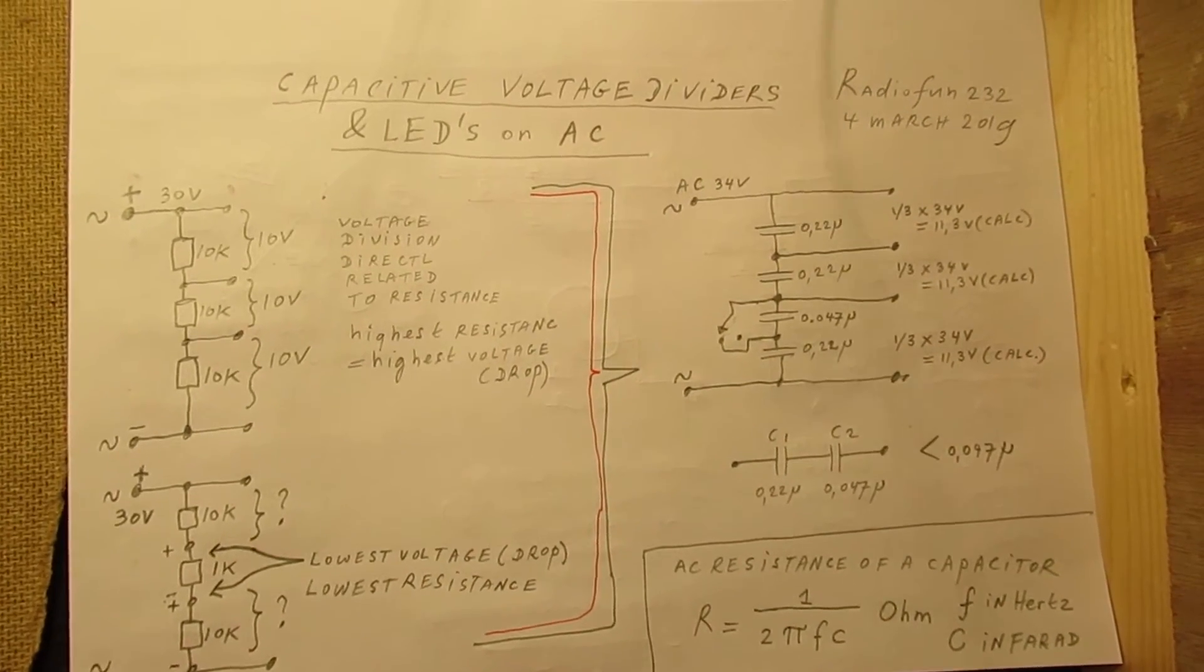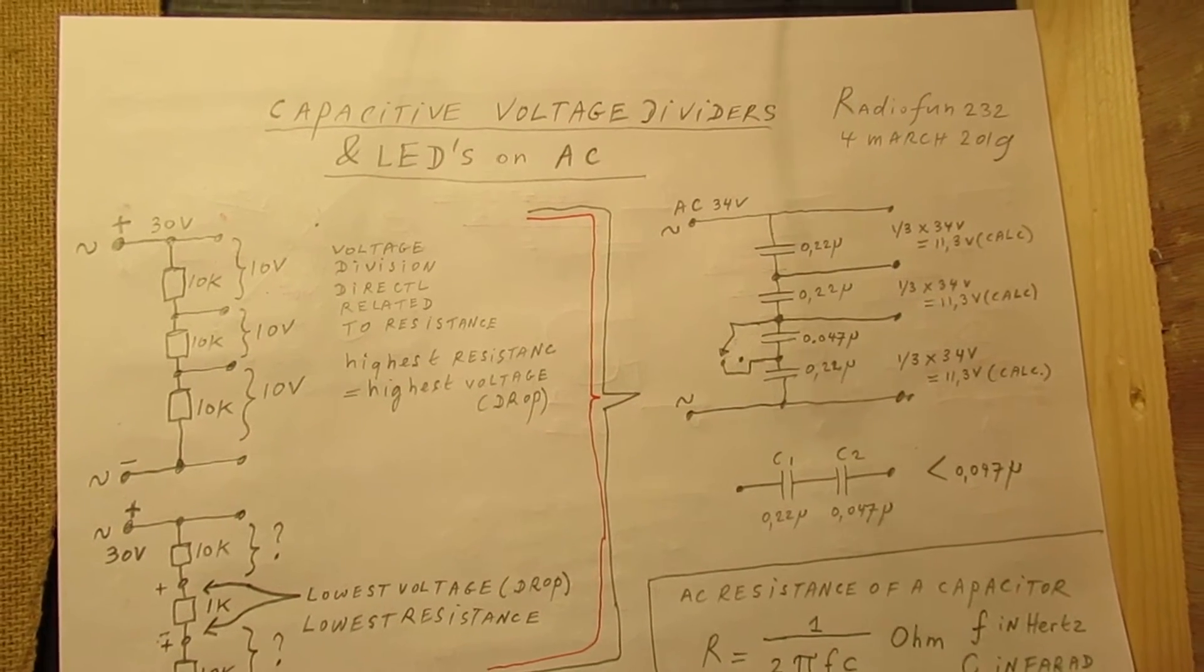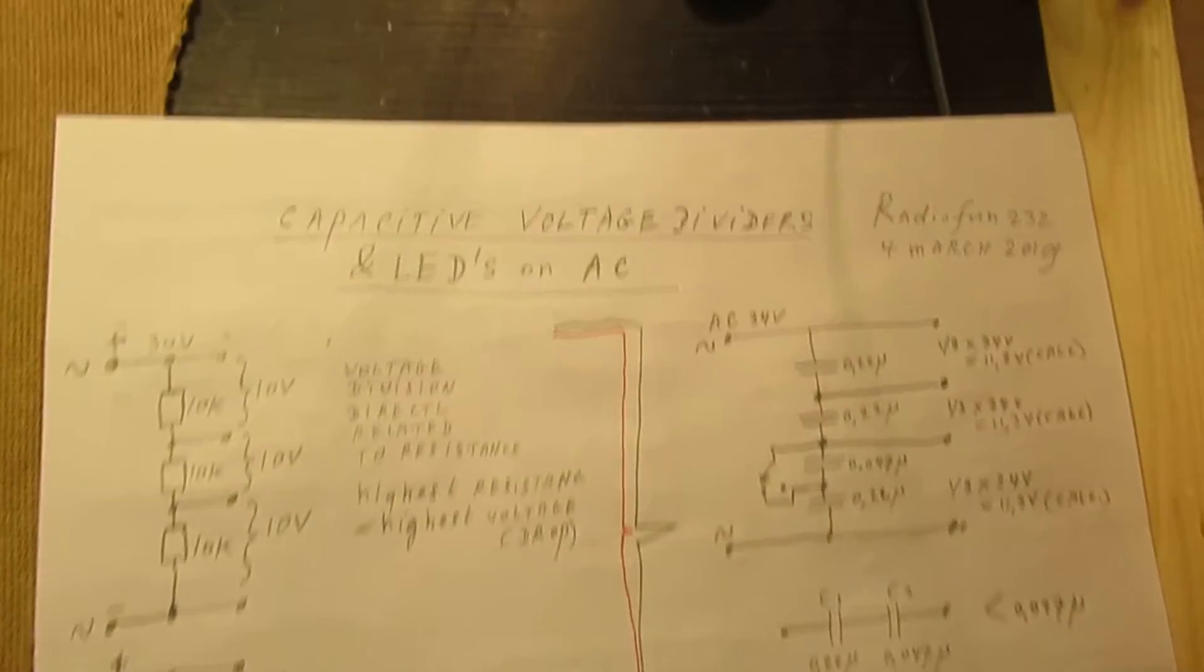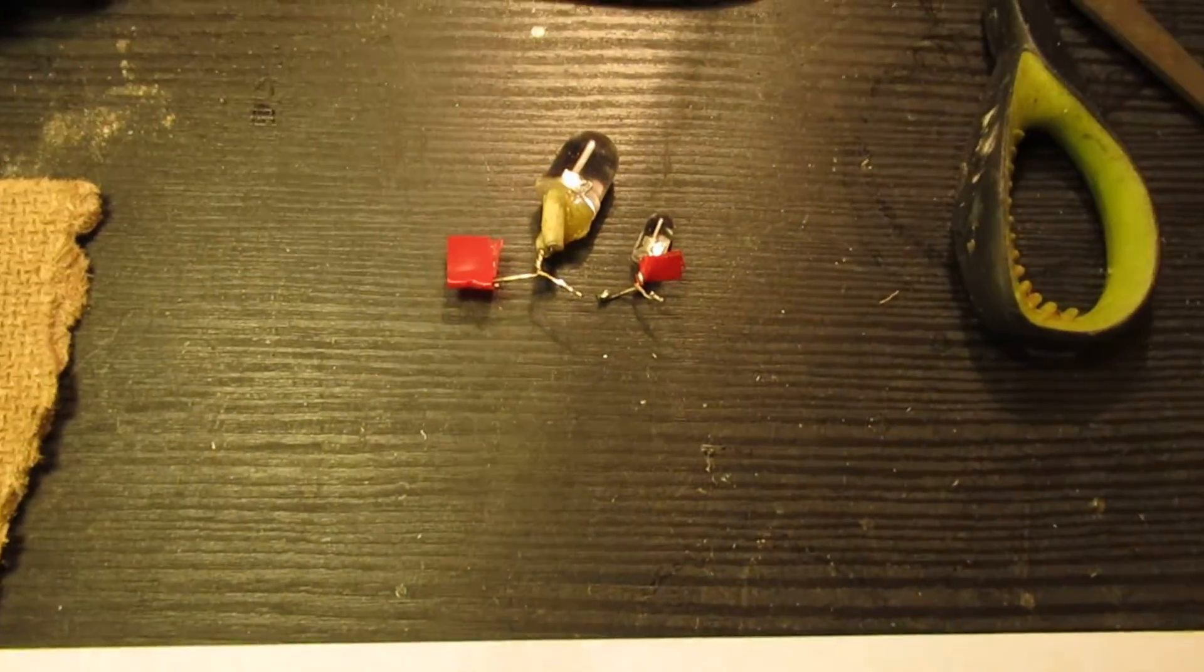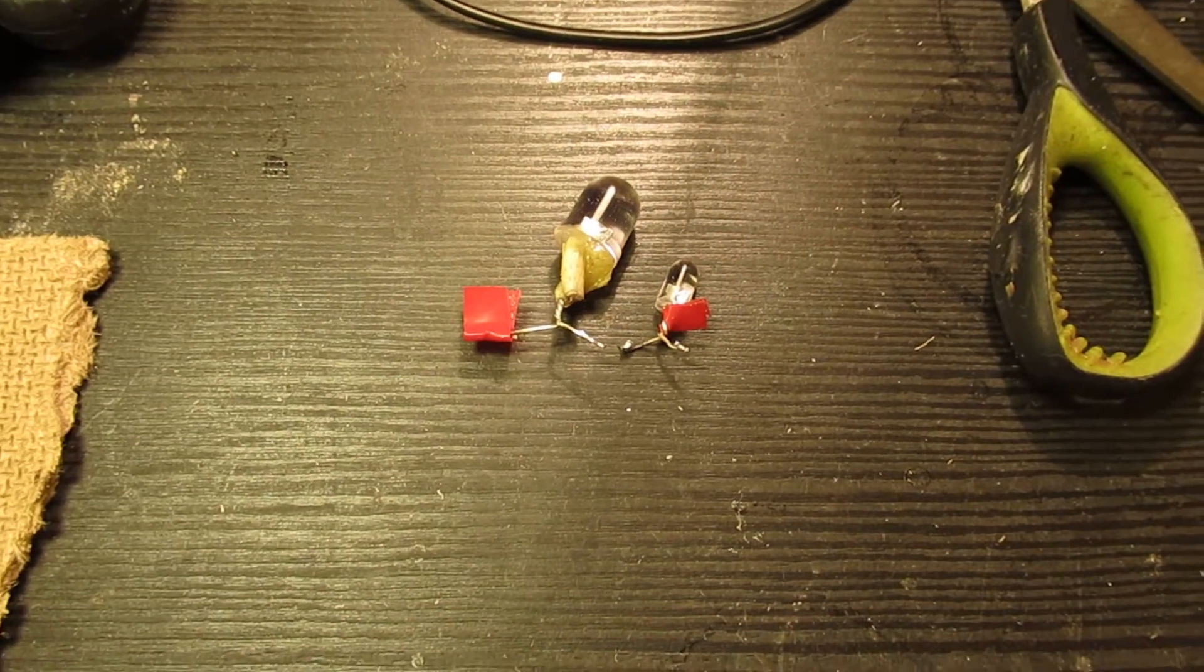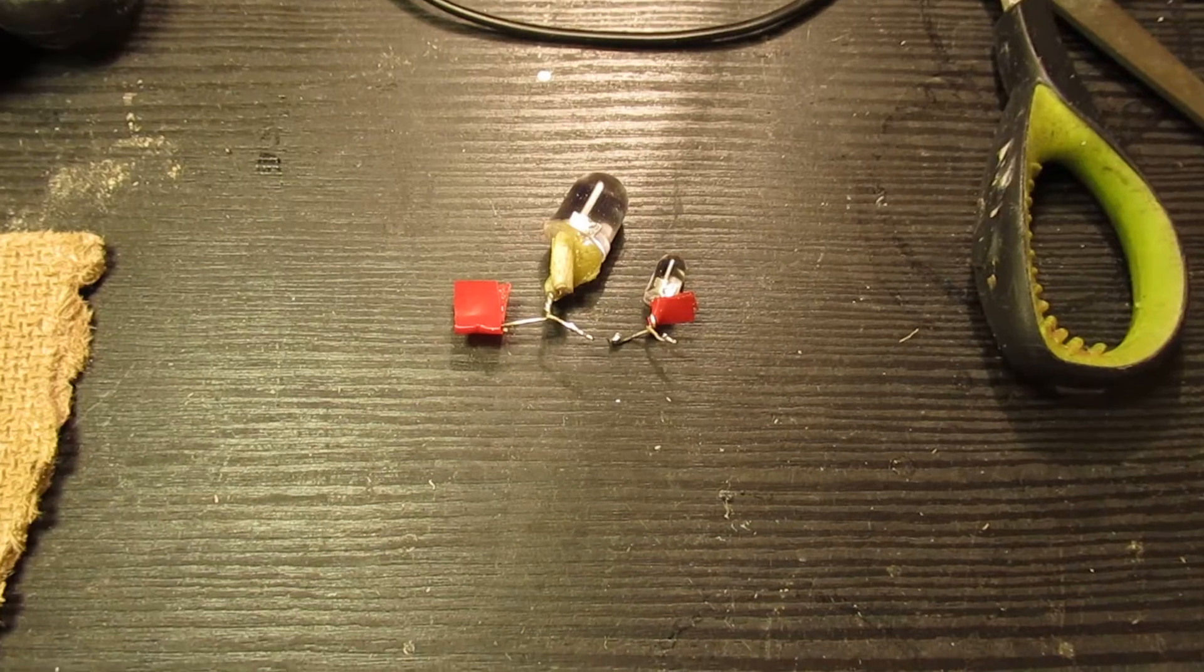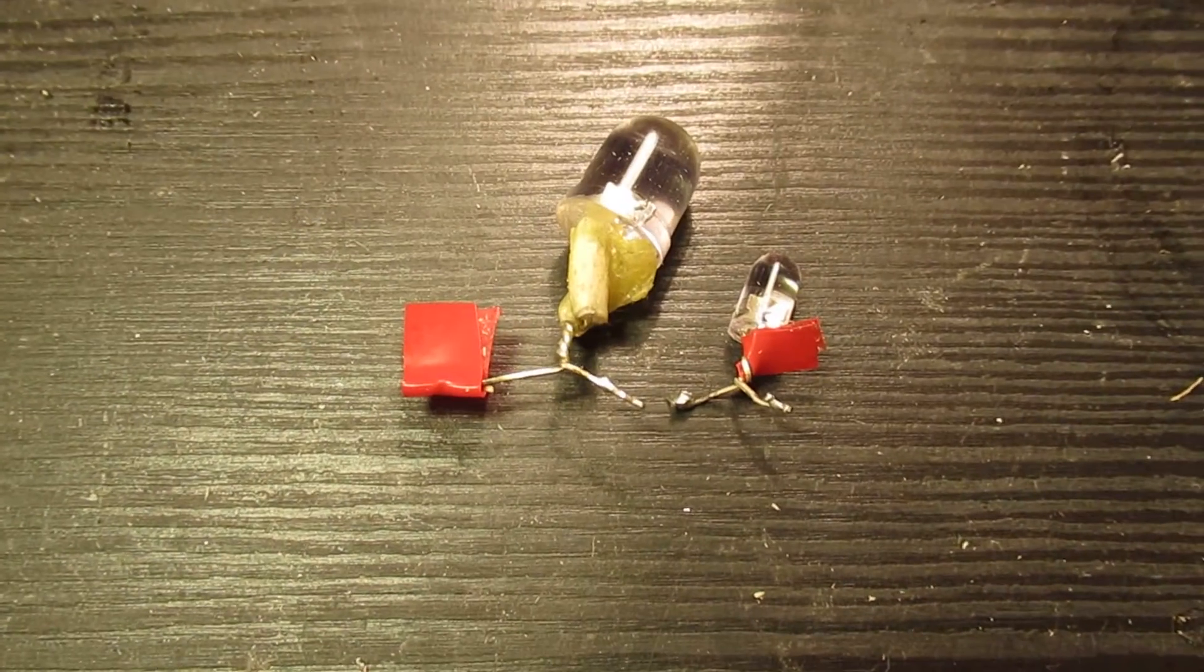In this video, something about the capacitive voltage divider and how you can hook up LEDs to an AC source. Perhaps you have sometimes tried to connect a LED via a capacitor to a high voltage, and I'm almost sure that was not very successful. I did this experiment today and burned out these ones.